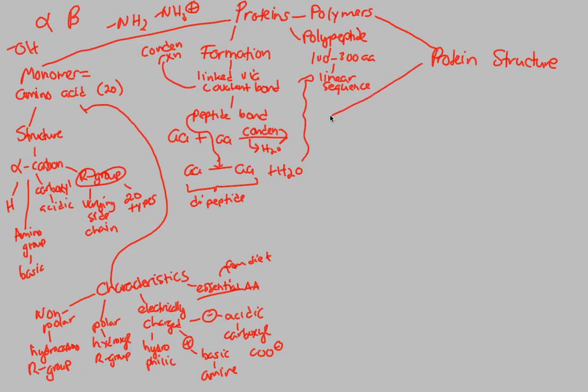The first structure that you want to know is known as primary structure. Primary shorthand is written as 1 with a degree sign. Primary structure is the basic structure of a protein.